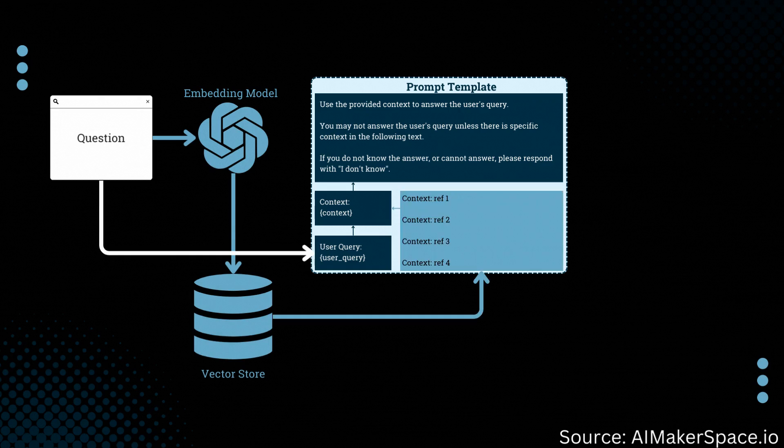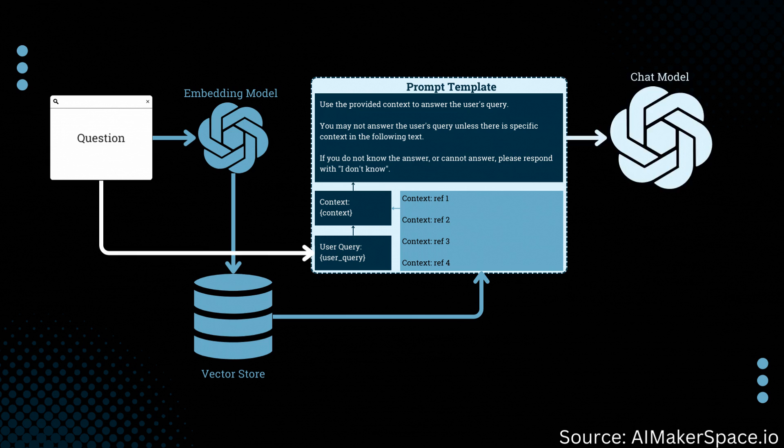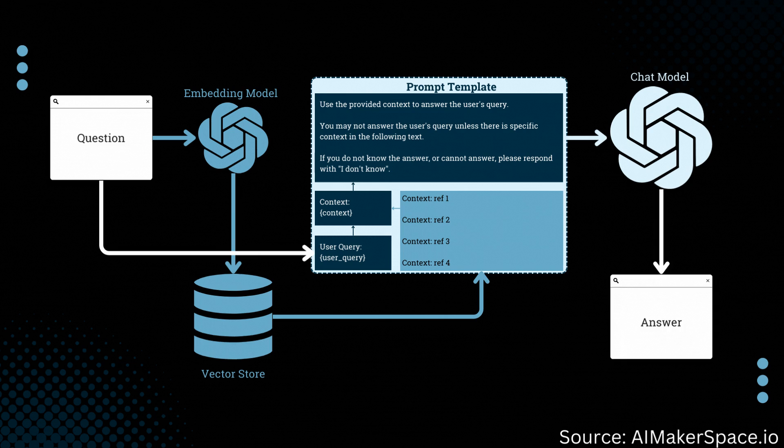We take that vector and search our vector database to find data points that are most similar to that query vector. The retrieved data is then used to augment the original query prompt, and the augmented prompt is fed to the language model to generate a response.